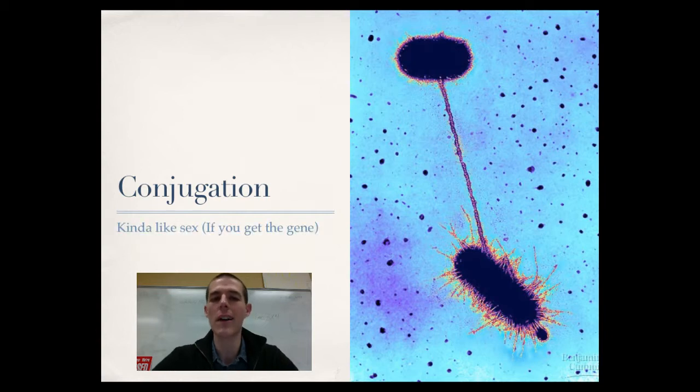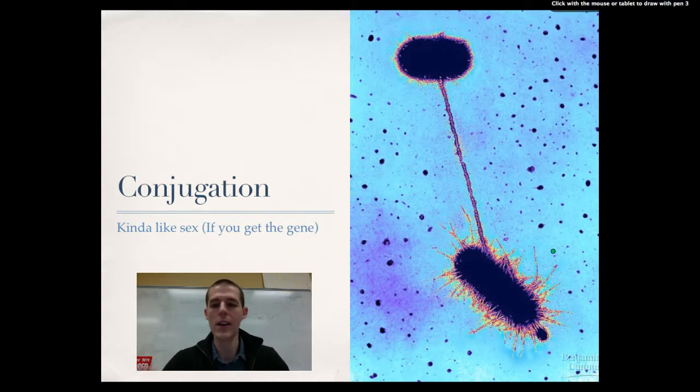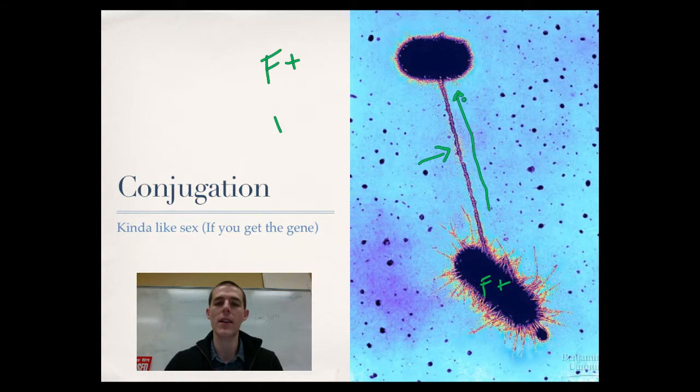You also have a situation called conjugation. Bacteria, some bacteria, are able to form a novel little structure called the sex pilus. That would be this little guy right here. Sex pilus works kind of like a grappling hook. So only certain bacteria are able to make these. The bacteria that are able to make it have a gene or they are known as being F positive for fertile positive. So let's say this guy is F positive. He creates a sex pilus that goes out, it attaches to this bacteria, and then like a grappling hook, it pulls it back.